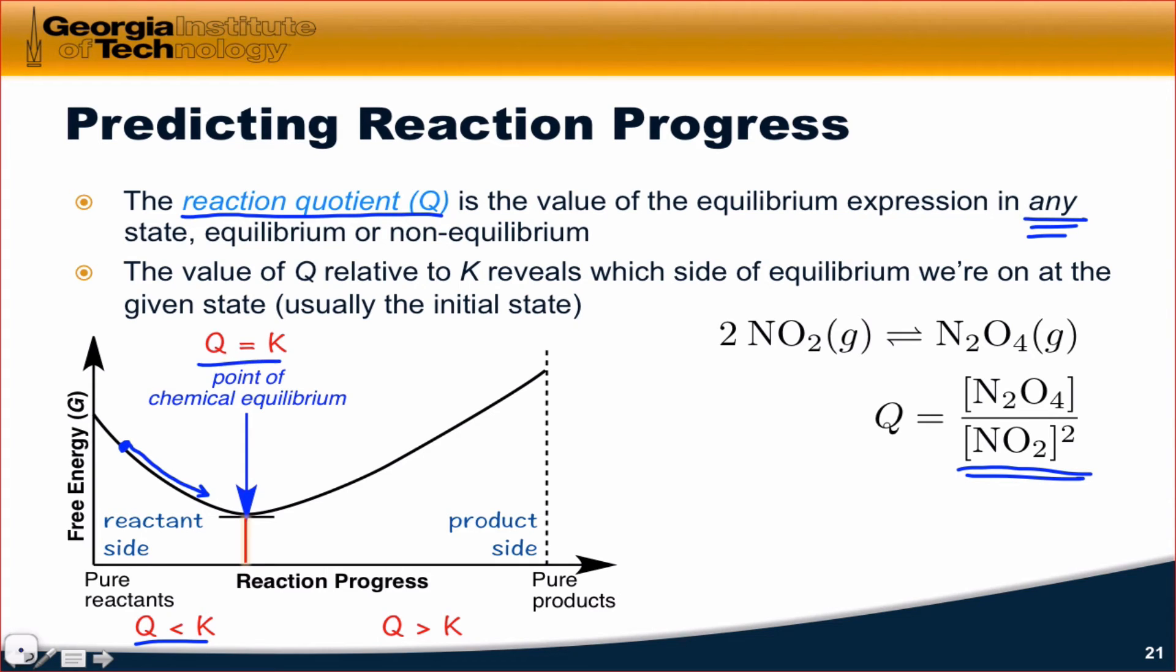If we calculate Q and Q is equal to K, we can immediately stop and say, look, we're already in an equilibrium state, so the reaction will, on the whole, go neither forward nor backward. We're already in equilibrium.